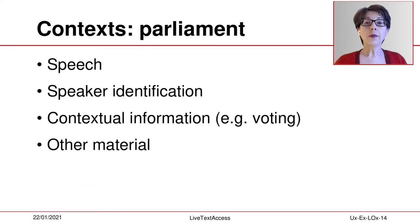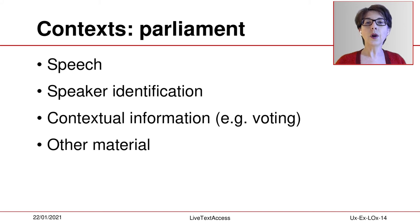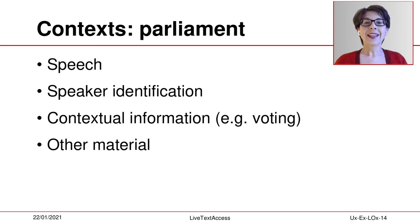In parliaments, the most important features to be subtitled are, in this order: speech — which should be as verbatim as possible and without features of orality such as tone or stress — then speaker identification, which is especially important because words need to belong to the actual speaker; otherwise, diplomatic incidents could occur. Then contextual information, which becomes key when voting takes place.